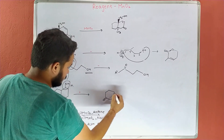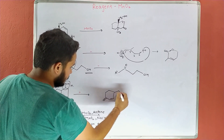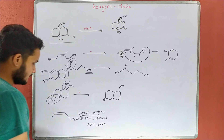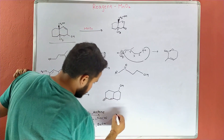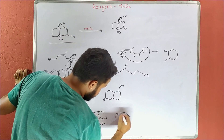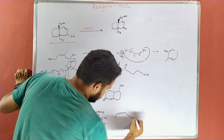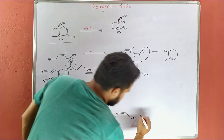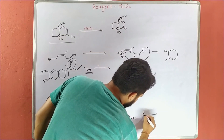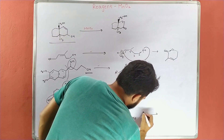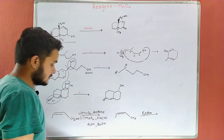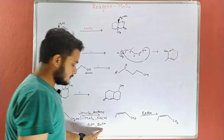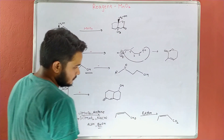यह double bond O हो जाएगा और यहाँ OH ऐसे ही रहेगा। Last question में CHO बन जाएगा, और अब oxidation to ester की condition बन गई। तो इसको ester में convert कर देंगे — यह CO2 जैसा बनेगा। यहाँ butyl alcohol लिया है तो butyl ester form होगा।